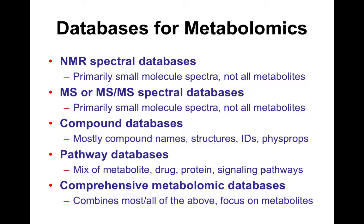I'm going to talk about databases in three or four different categories: spectral databases (NMR and MS ones), and chemical property or compound databases covering compound names and physical properties. Probably the most important are pathway databases. Metabolomics still stumbles and fails as a science, at least to my mind, because we're unable to do the proper interpretation of the data.